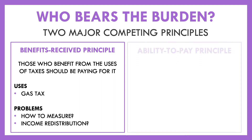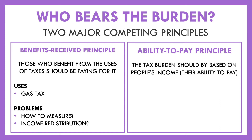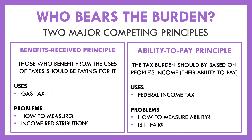The prevailing idea is the ability to pay principle: taxes should be distributed based on people's income, or their ability to pay. That's how the federal income tax is set up — the more you make, the higher percentage you pay. However, there are problems: how do you measure someone's 'ability'? Two people earning the same income may face very different costs of living, or one may have seven kids. Also, is it fair that people in higher-paying jobs must pay a greater share of what they earn?